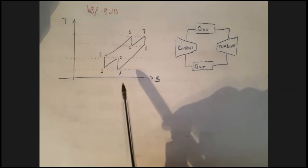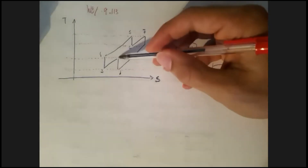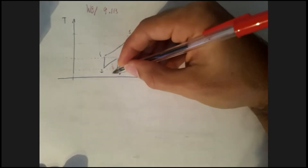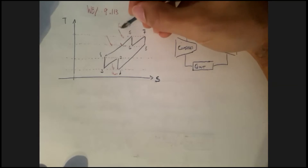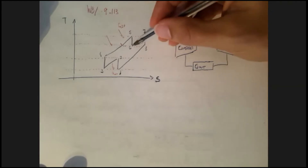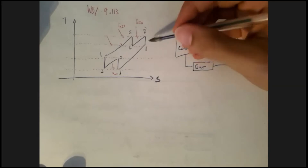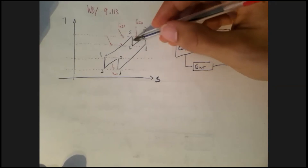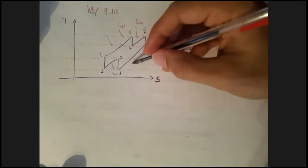With two compressions and two expansions, we now have eight states instead of four. On the TS diagram, we go from one to two on an isentropic compression, then a heat rejection, then another isentropic compression. Then a heat addition process up to state five. From five to six is the first isentropic expansion. Then we add more heat, go to state seven, and have a second expansion to state eight. Work comes out from five to six and from seven to eight, and then there's a heat rejection stage.